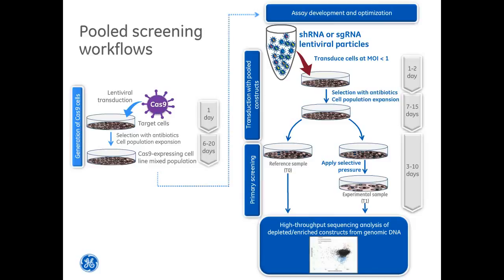One important difference between shRNA and sgRNA workflows is that shRNAs use the endogenous mammalian RNAi machinery to silence target transcripts. With CRISPR-Cas9, the sgRNAs need the bacterial protein Cas9 to find and cleave the target genomic sequence. For sgRNA pooled screens, Cas9 must be provided exogenously. We recommend that the Cas9 expression cassette be integrated and stably expressed in the cells used for screening. Lentiviral particles containing Cas9 are transduced into cells, which are then antibiotic-selected and expanded before proceeding with the sgRNA screening workflow.